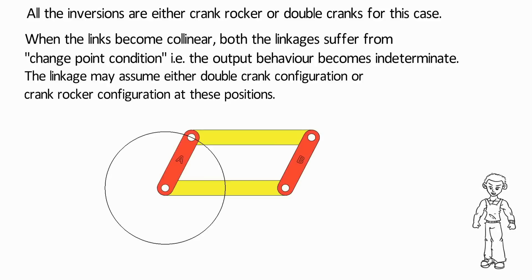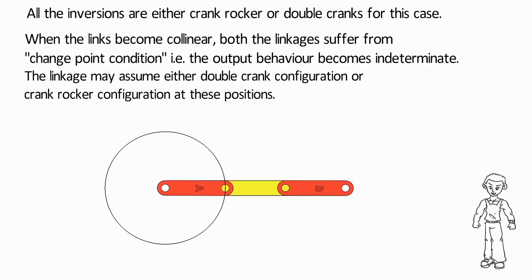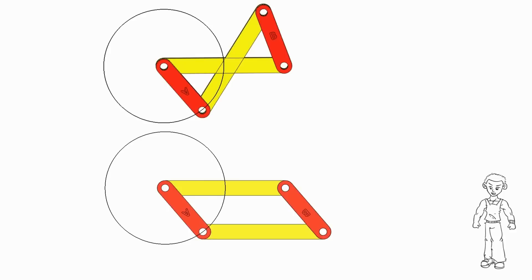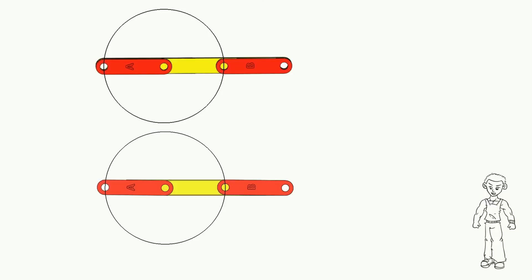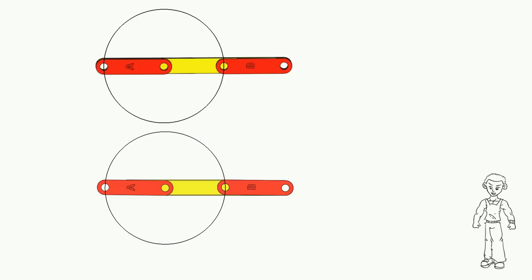Let us understand it with the help of an example. Consider the parallelogram linkage, where link A is the input crank. As the crank rotates, the links become collinear — this is the first change point condition. At this position, motion of link B becomes unpredictable; it can go either of the two ways. As the input crank, link A, rotates further, the links become collinear again. This is the second change point condition. Motion of link B is again unpredictable at this position and it can go either of the two ways.